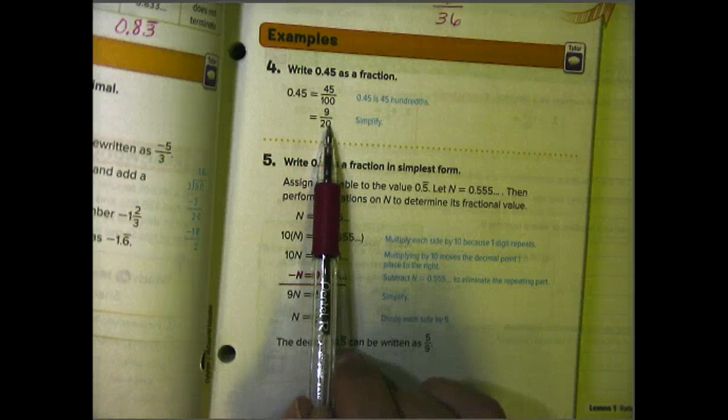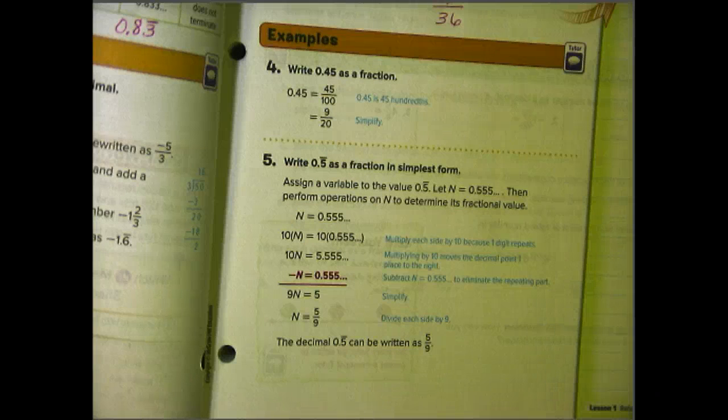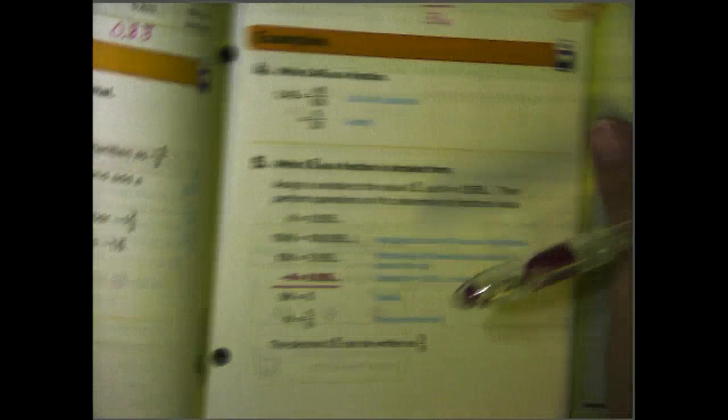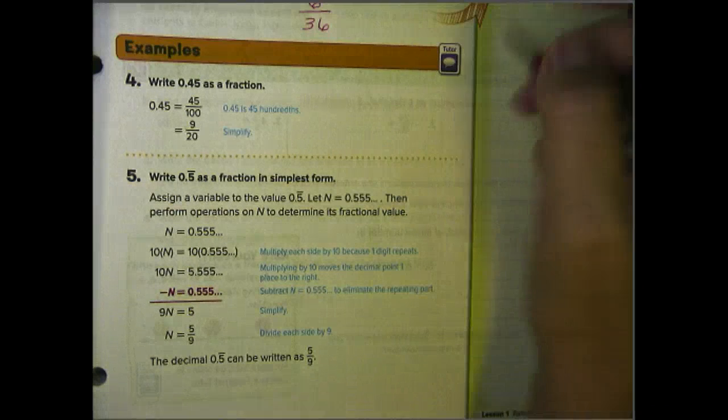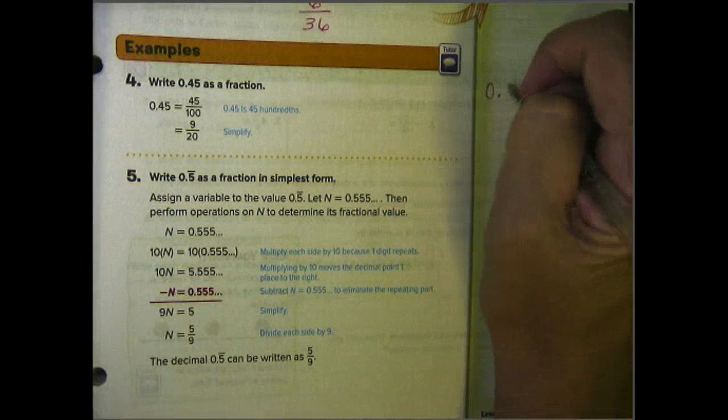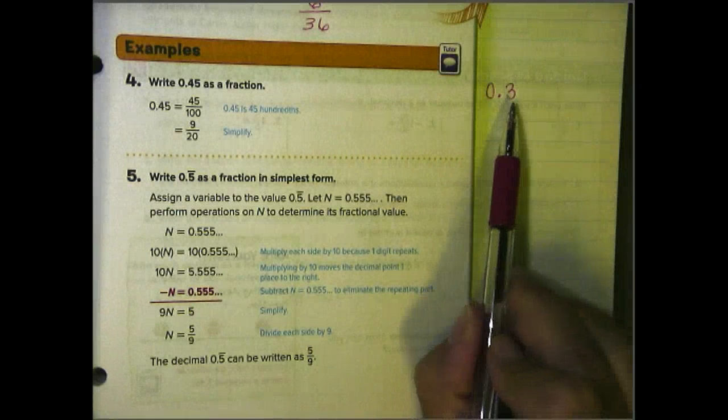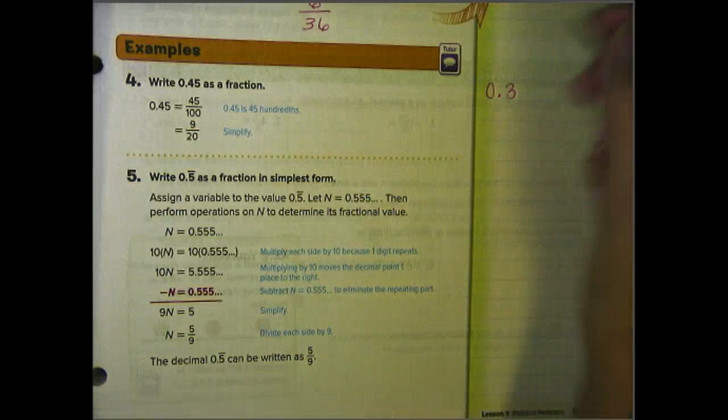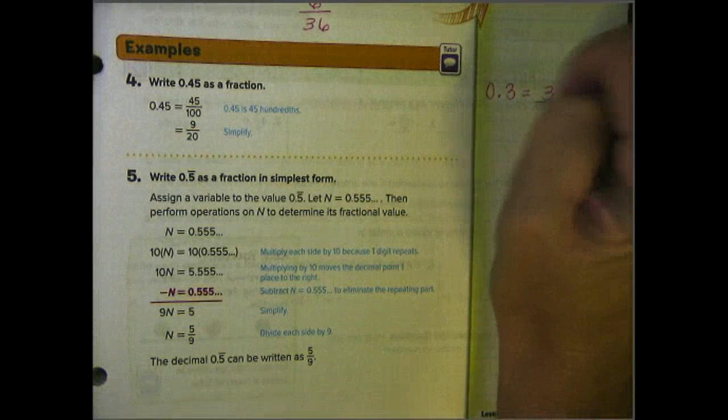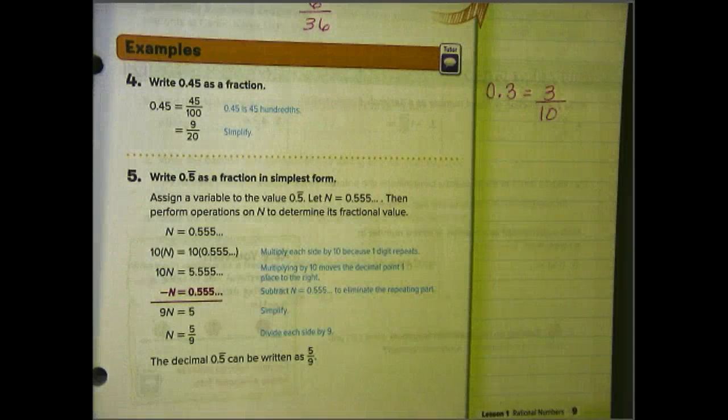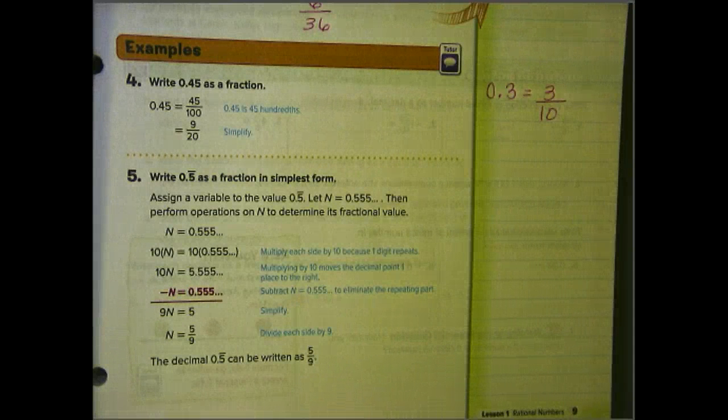Before we move to number 5, let's just look at an example ourselves over here to the side. So if I had 0.3, this is 3 tenths because it's in the tenths place, so I would just write it 3 over 10. And it's simplified, so I don't need to do any further simplification.